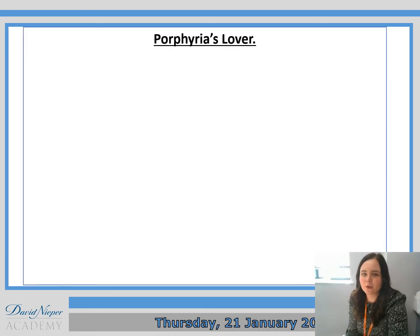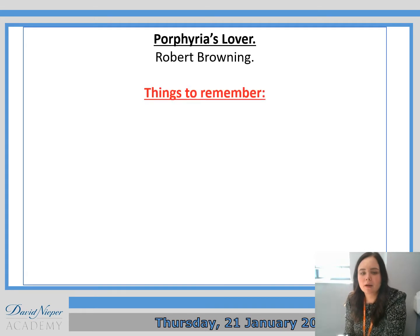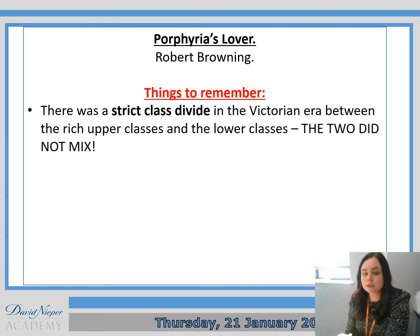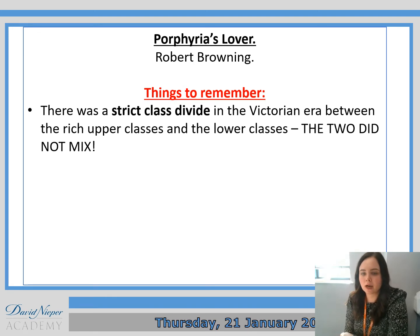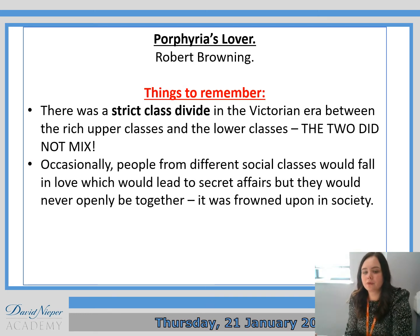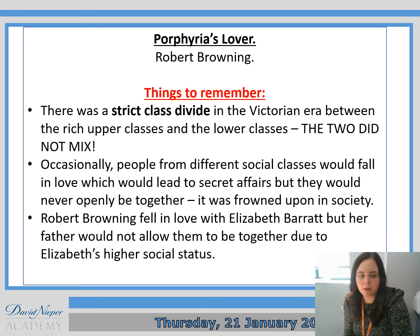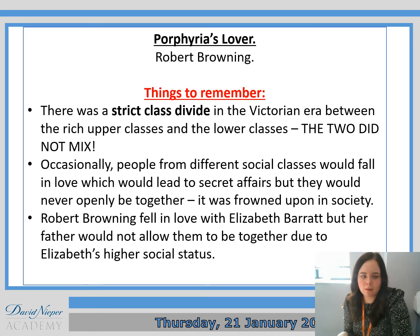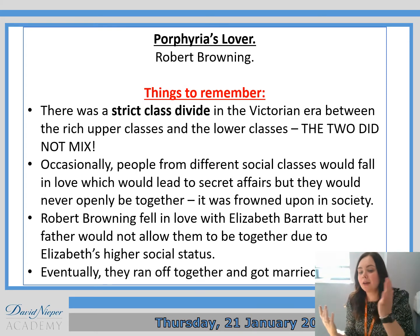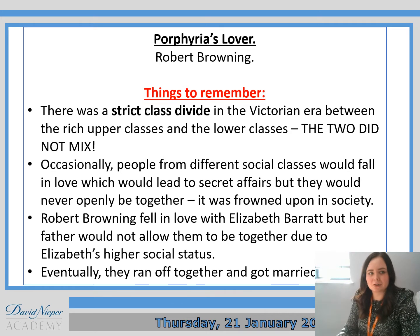So you should have named Porphyria's Lover, and it's written by Robert Browning. The things that you need to remember about this one: there was a strict class divide in the Victorian era between the rich upper classes and the lower classes — the two did not mix. Occasionally people from different classes would fall in love, which would lead to secret affairs, but they would never be openly together in society as it was frowned upon. Robert Browning fell in love with Elizabeth Barrett, but her father would not allow them to be together due to Elizabeth's higher social status, and eventually they ran off and got married, which we discussed last lesson.